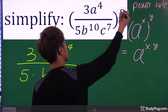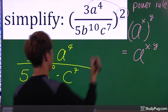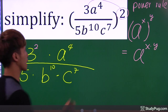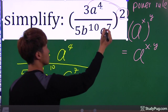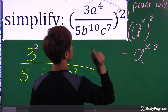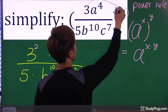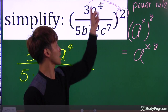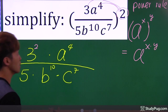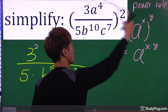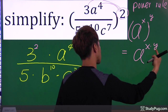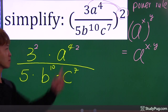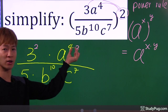We can bring the exponent to everyone. So let's bring the exponent to 3 first. Now let's bring the exponent to the second guy right here — let's bring the exponent 2 to a to the power of 4. Exponent, exponent — we can just put them together. So let's bring the 2 right next to 4. Exponent, exponent — let's just put them together.